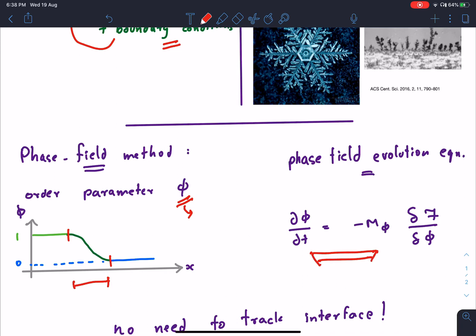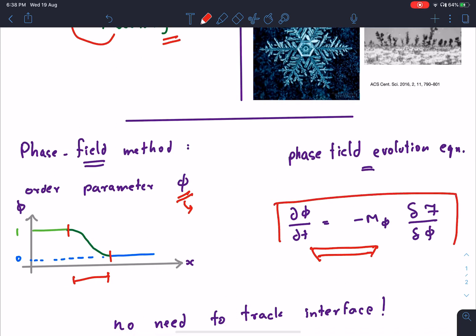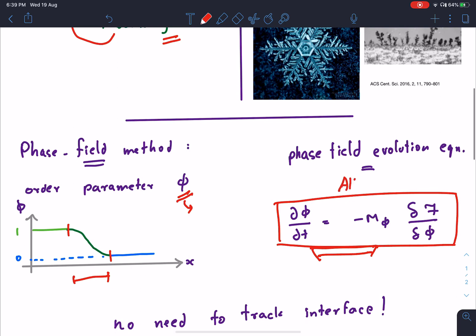This differential equation is just one of many possible equations that can be written, and this is called the Allen-Cahn equation.